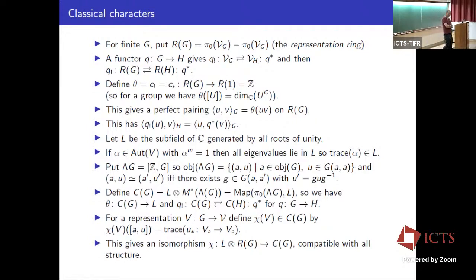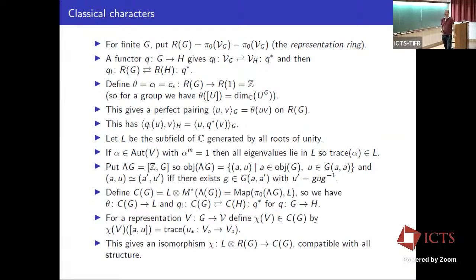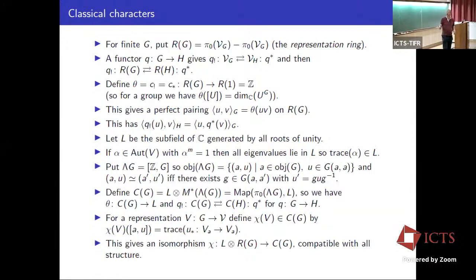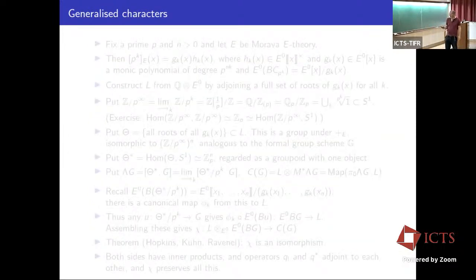That was a warm-up for generalized characters. The Morava E-theory of BG is in many ways analogous to R(G), and we hope for a similar character isomorphism. We fix a prime P and height n > 0 and let E be the corresponding Morava E-theory. In Morava K-theory the P-series is just x^{p^n}, the p^k-series is x^{p^{nk}}. For Morava E-theory it's more complicated but still a polynomial of degree p^{nk}, and reducing modulo the generators u_i recovers the Morava K-theory P-series.